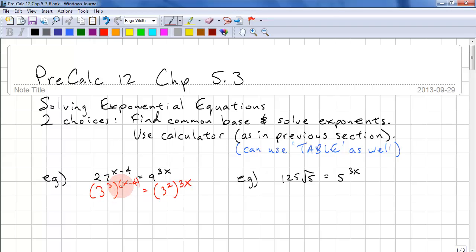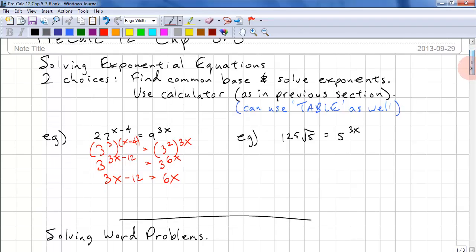And that's raised to the power of 3x. This is the power to the power rule. And we multiply the exponents. So this is 3 to the power of 3x minus 12. And this is 3 to the power of 6x. Now that we have the same base, we can just equate the exponents. So this is 3x minus 12 equals 6x. And we just solve as normal. So 3x equals negative 12, x equals negative 4.